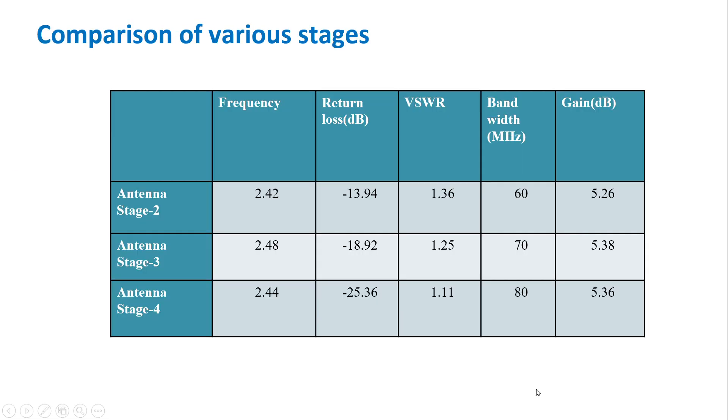When we compare the various stages of antennas, we can observe that the stage 4 of antenna is better in all aspects. When it comes to frequency, it is very well close to the ISM band. The return loss is minus 25.36. The lesser the return loss, more will be the gain and better will be the performance of the antenna. VSWR has to be close to 1 and the ideal value of VSWR is 1. So the stage 4 of antenna has 1.11, so it is the best possible outcome we can get. Bandwidth is also better when compared to the stage 2 and 3 as well as the gain.